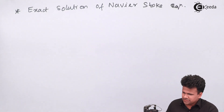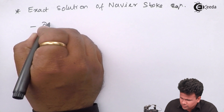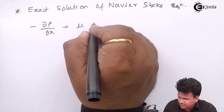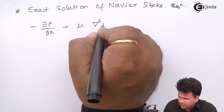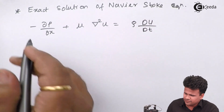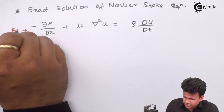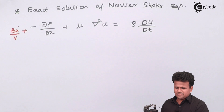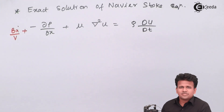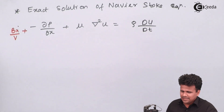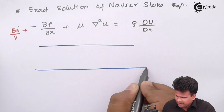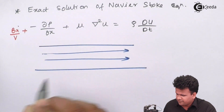Let us write down the Navier-Stokes equation along the X direction: minus ∂P/∂X plus μ times ∇²U equals ρ(∂U/∂t). We will always have the body force per unit volume, but we do not need to consider this force in the fluid mechanics problem we are considering right now. Let us analyze a real-life problem in which a fluid is flowing in the positive direction of the X axis.